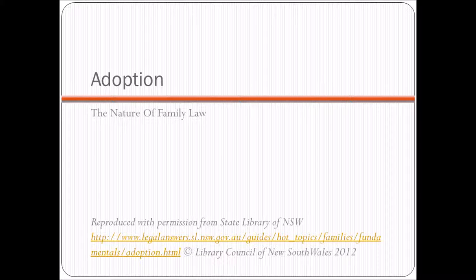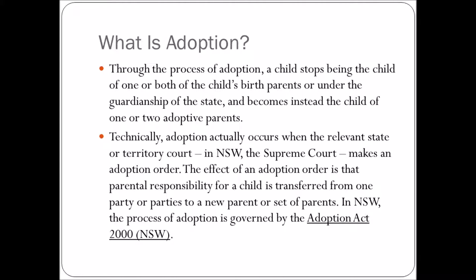We're going to be looking at adoption. To do that we need to understand what adoption is. The process of adoption is when a child stops being the child of one or both of the child's birth parents, or under the guardianship of the state, and becomes instead the child of one or two adoptive parents. That's the official definition of adoption. Often it involves the transfer of responsibility from one set of parents to another.